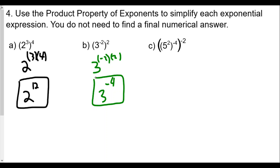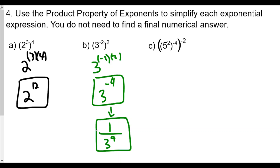We can also express this as a positive exponent. Sometimes you'll be asked to write your answer with a positive exponent, so three to the negative four becomes one over three to the positive four. If you don't need to express it as a positive exponent, three to the negative four is fine; otherwise, write it as one over three to the fourth power.